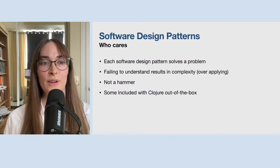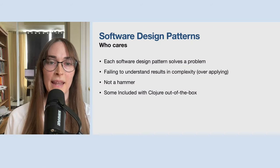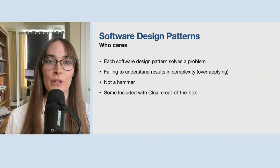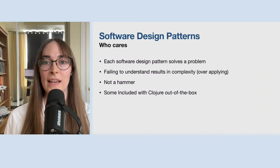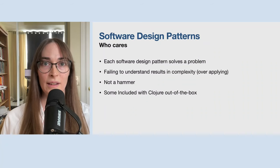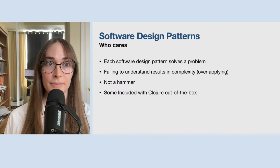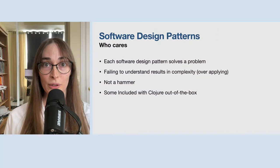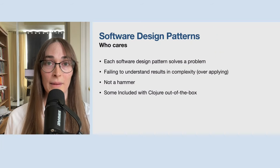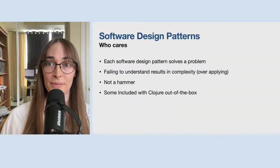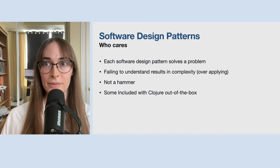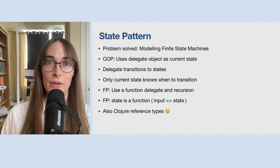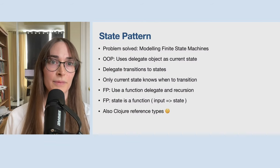I'm not saying we should go out and learn all the design patterns to find a nail for a new hammer. Rather, I want you to develop an eye for the problems and then maybe use some of that when doing functional programming. I'm not the only one who thinks this — some design patterns are actually included with the Clojure programming language, and I'll touch on those in a few minutes. First I want to cover a very classic design pattern that could be used in other functional programming languages: the state pattern.